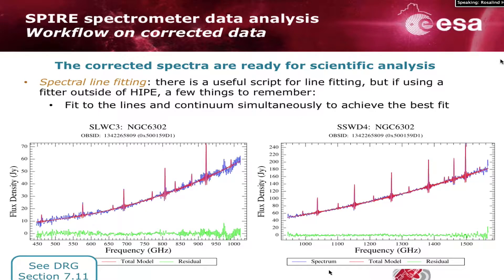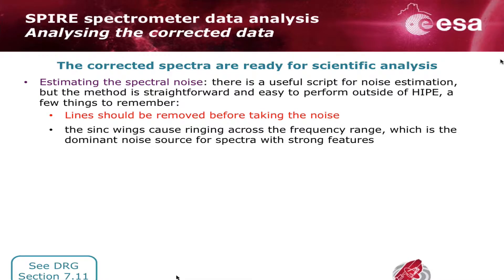On line fitting, you should fit to the lines and the continuum simultaneously to achieve the best fit. This is the approach taken in the spectrometer line fitting useful script in HIPE, and it's also a good method to use outside of HIPE. The plots you get from the line fitting script show the fitted model in red, the residual in green, and the input spectrum in blue. Also, you might want to estimate the spectral noise. There is a useful script in HIPE to do this using a straightforward method that you could easily recreate outside of HIPE. Things to remember: you must remove the lines before taking the noise if you have significant features, because sinc wings cause ringing across the whole frequency range — that is the dominant noise source for spectrally strong features. If you don't remove them, you won't get the right results.